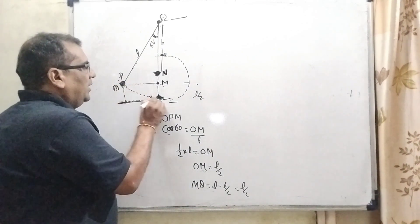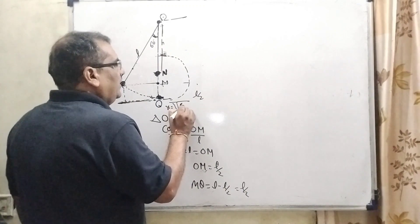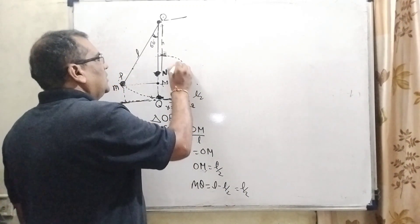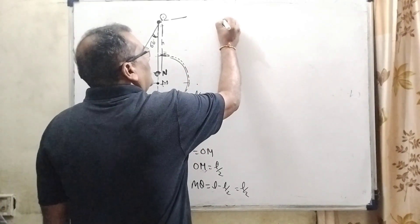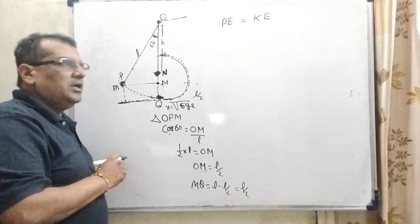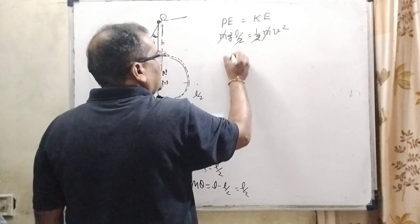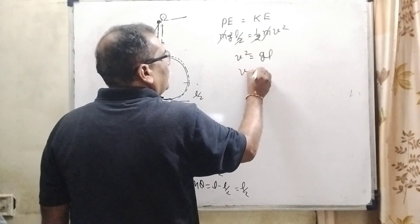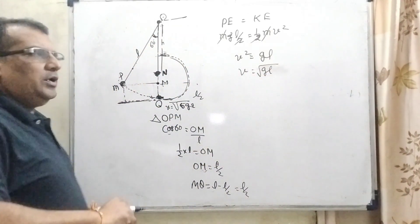As the pendulum reaches Q, we know that a velocity greater than or equal to √(5gR) is required to complete the circular path. By using the law of conservation of energy, potential energy equals kinetic energy, since the energy converts into kinetic energy upon release. So: mgh = (1/2)mv², where h = L/2. Cancelling m and simplifying, V² = gL, therefore V = √(gL). This is equation number one.